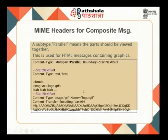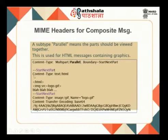You can also have what are called composite messages, where all the different parts of the message have to be viewed together. This is typically used when you have HTML messages which contain graphics — for instance an HTML message with a number of images that you would like to see all together. In these cases we use another content type called 'multipart/parallel'. The parallel subtype indicates that all the parts of this particular message have to be viewed in parallel — they all have to be interpreted together before they can be displayed. Other than that it is pretty much similar: a start boundary, followed by content type, followed by the actual content, again start boundary followed by content type and content, and so on.